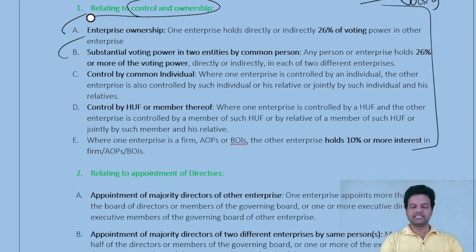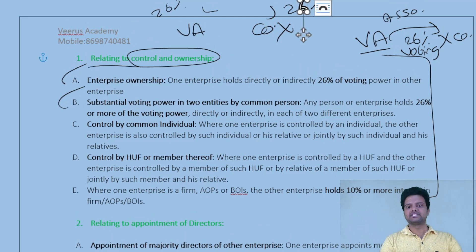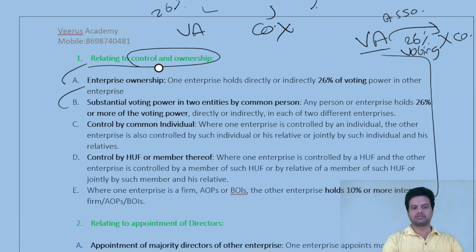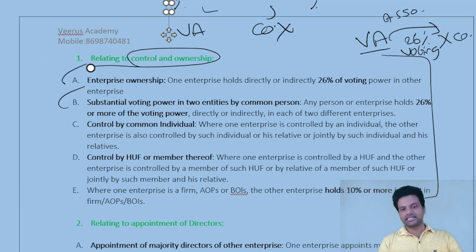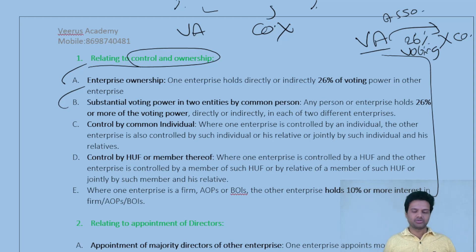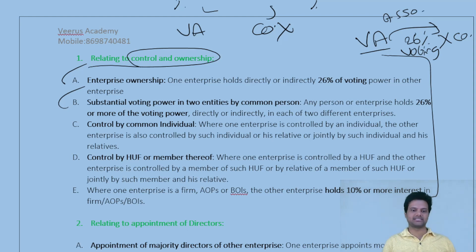Point C: In the same example, Ratan Tata doesn't hold any stake in either company, but he has controlling power in both — he can decide who becomes the Board of Directors, the MD, or the manager. Even without a stake, Virus Academy and Company X are said to be associated enterprises because one common person controls both companies.